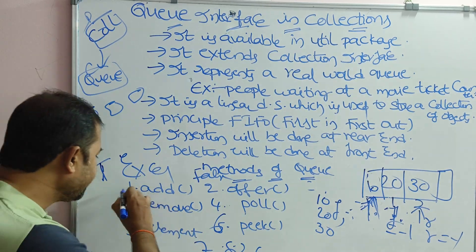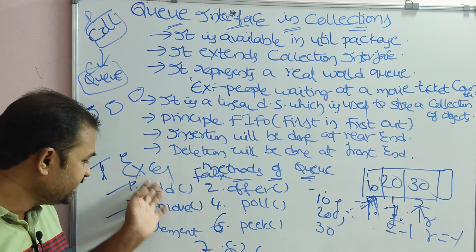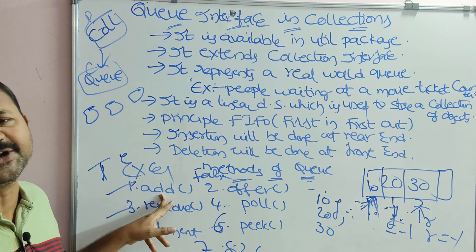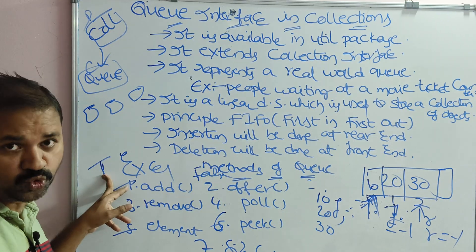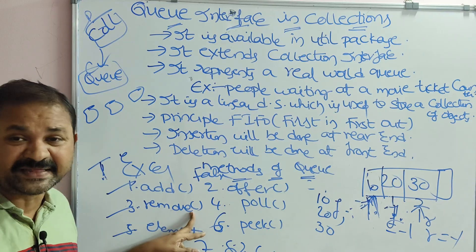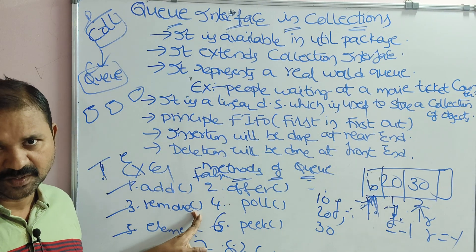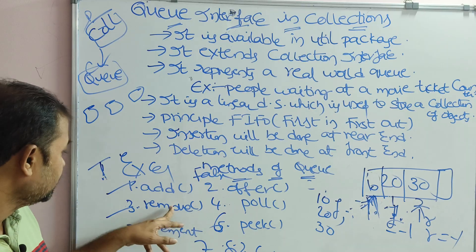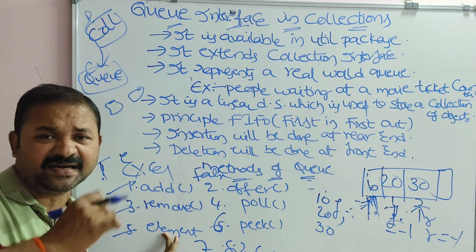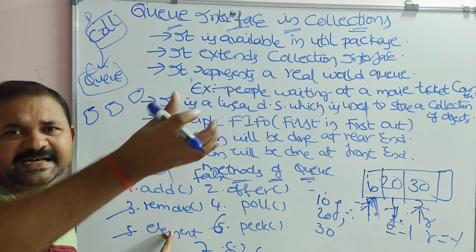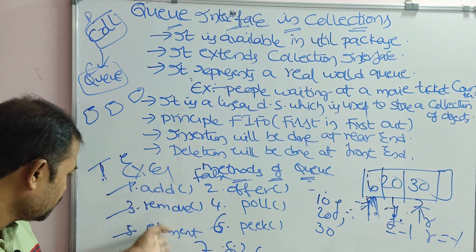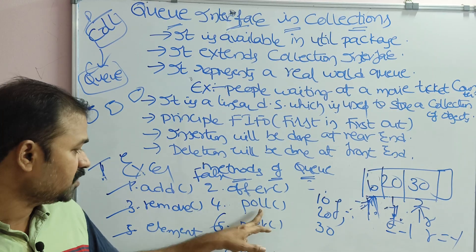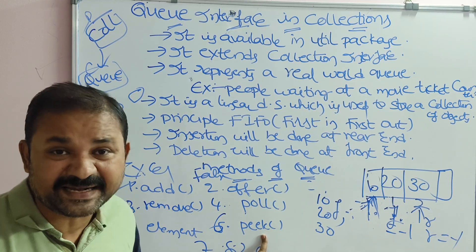To summarize: size returns the size of the queue. The add, remove, and element methods return an exception if the operation fails. The offer, poll, and peek methods return false or null respectively when the operation fails.